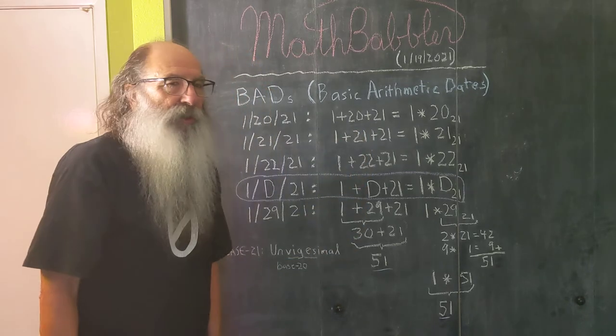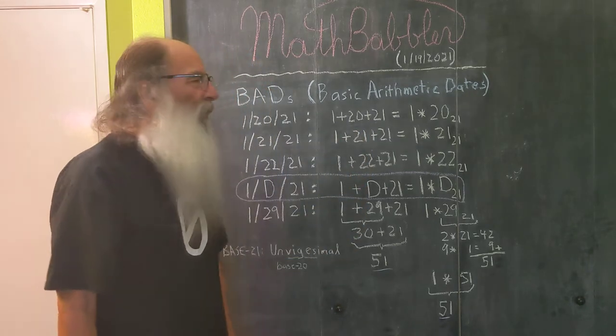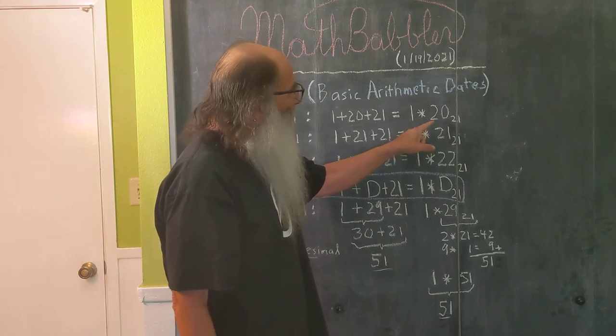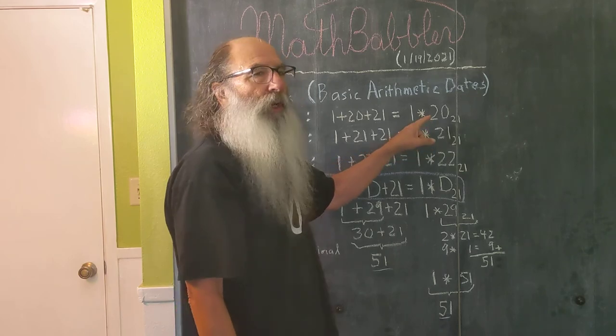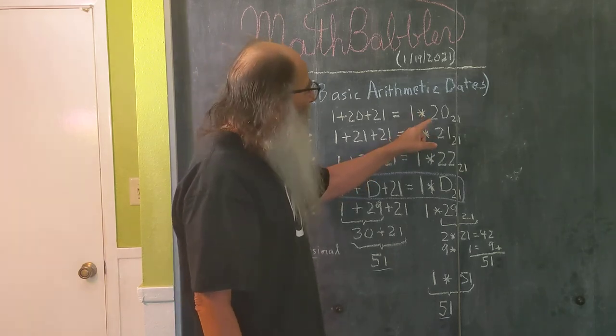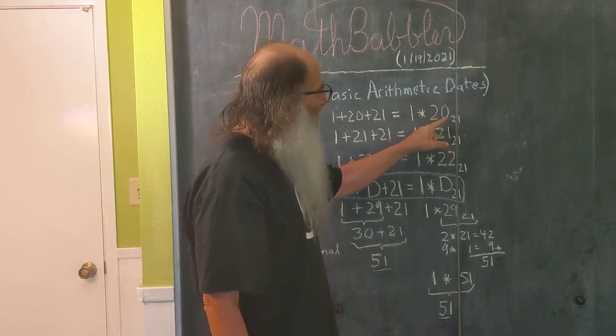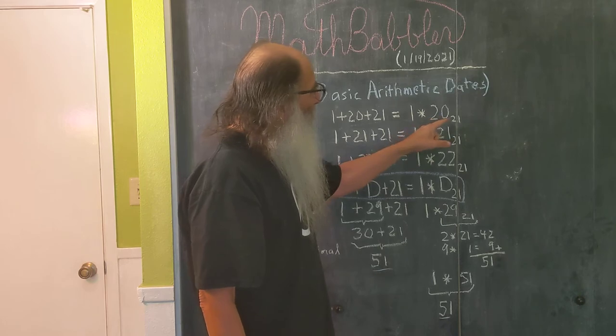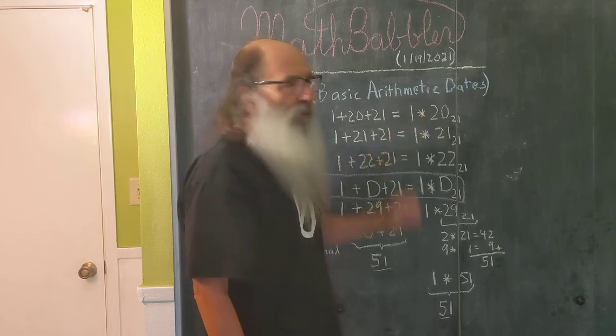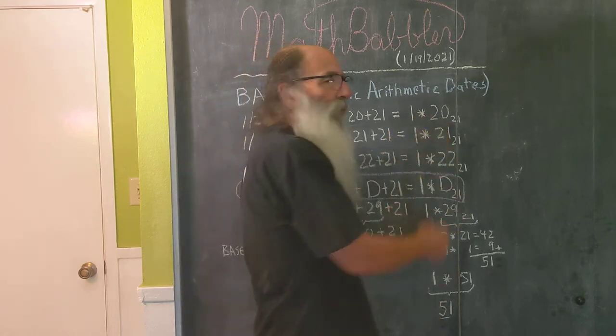Well when we switch to the base 21 number system, this digit is no longer in the tens, it's in the 21s place. So we have two units of 21 and 0 ones. Two units of 21 is 42. 42 plus 0 is 42. 42 times 1 is 42. So that's why that equals 42.